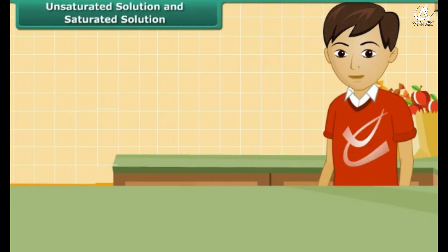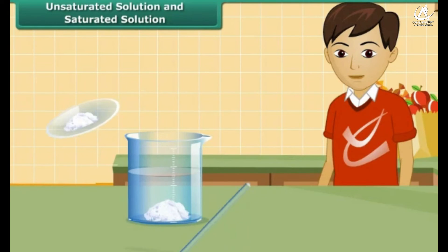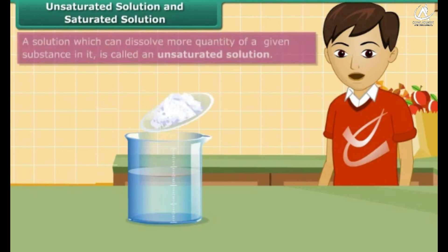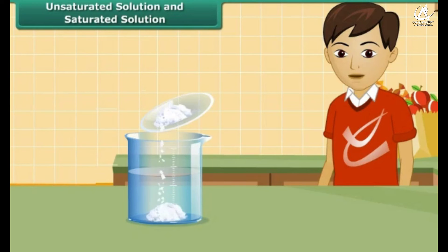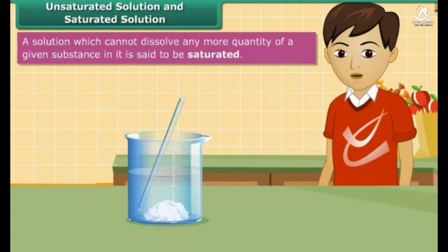Let us now do another workout. Take a beaker and dissolve some amount of salt in it. Go on adding salt to the solution. As long as the salt is dissolved in water, the solution is an unsaturated solution. But a stage will soon come when you will not be able to dissolve more salt in the solution. At this stage, the solution becomes saturated. Thus, a solution is said to be saturated if it cannot dissolve any more quantity of the given substance in it.